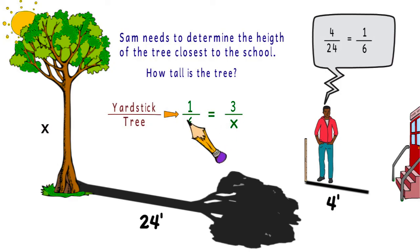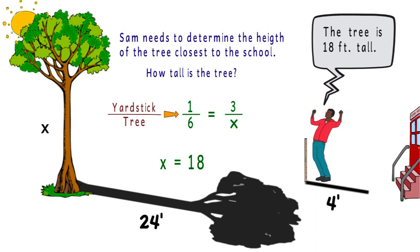So we can reduce the fraction and then cross-multiply to find the answer, which leaves us with x is equal to 18. So the tree is 18 feet tall.